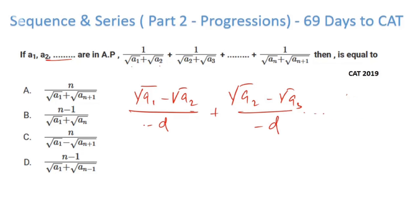If you keep adding this, finally what is happening here—I am getting √aₙ - √aₙ₊₁ and finally here I am getting -d.